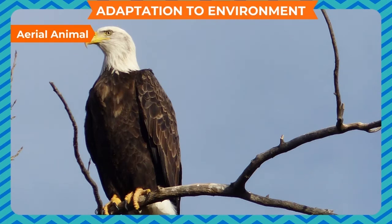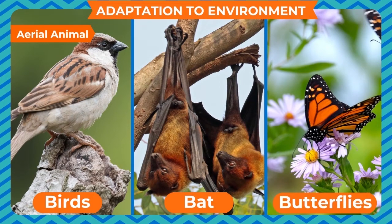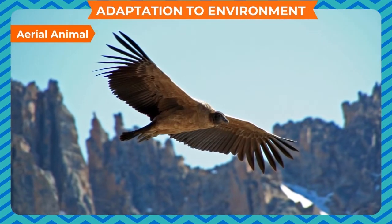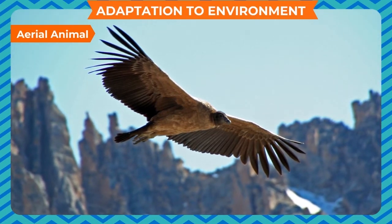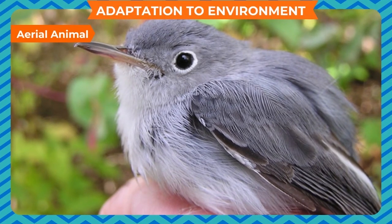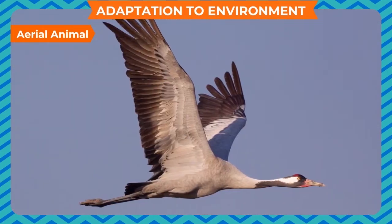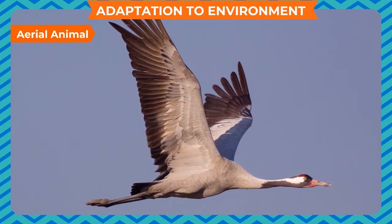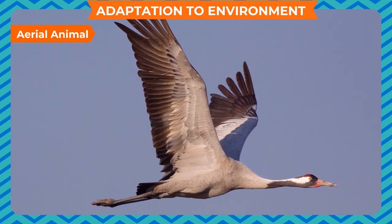Aerial Animals. Animals such as birds, bats, butterflies, etc. fly in the air. They are called aerial animals. They have wings to fly. These aerial animals have light and hollow bones. They also have feathers that make their bodies light in weight and help them to fly. The shape of their body enables them to pass through the air easily. This type of body shape is called streamlined shape.